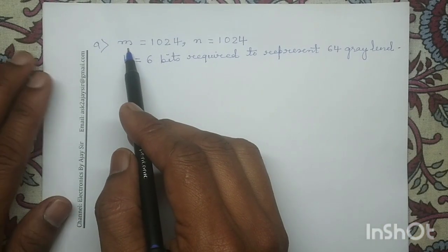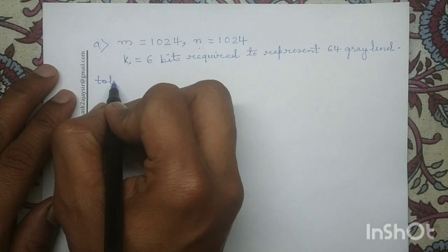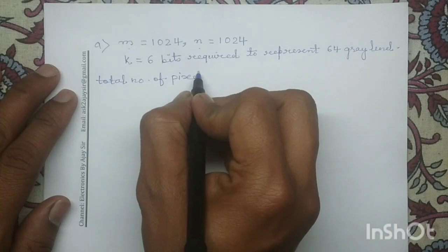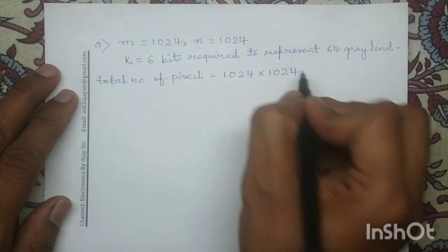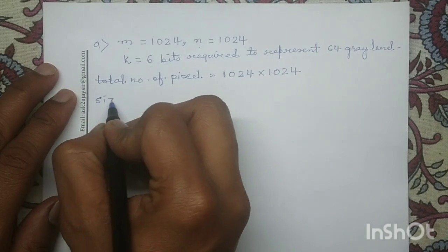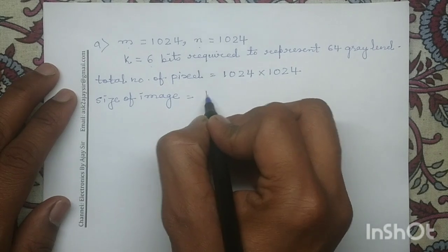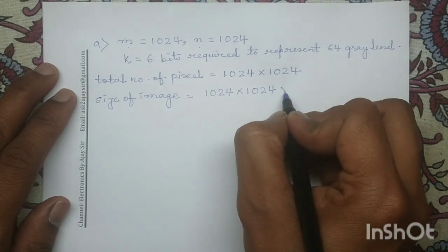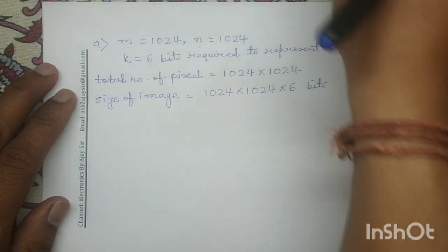The number of rows m is 1024 and the number of columns n is 1024. So the total number of pixels is 1024 × 1024. The size of this image is 1024 × 1024, that is the total number of pixels. Now each pixel requires 6 number of bits, so multiplying by 6 gives the total bits required.